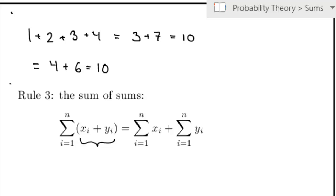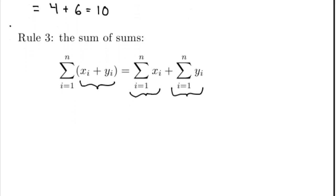If I have a sum where the expression inside the sum is itself a sum, such as xi plus yi, then I can split the sum into two sums, where I add all the xi's, and then I add all the yi's, and I add these together.